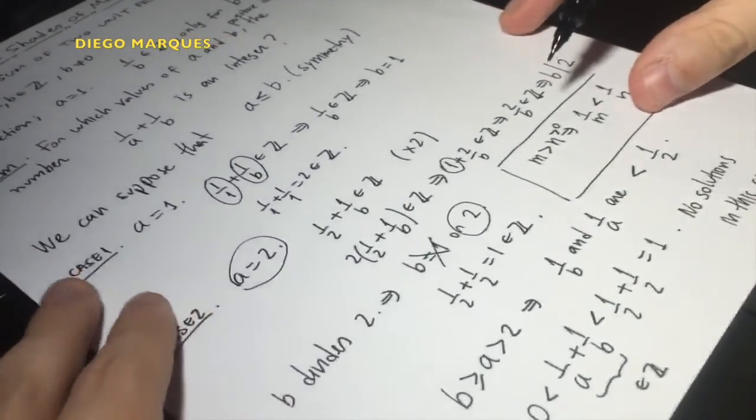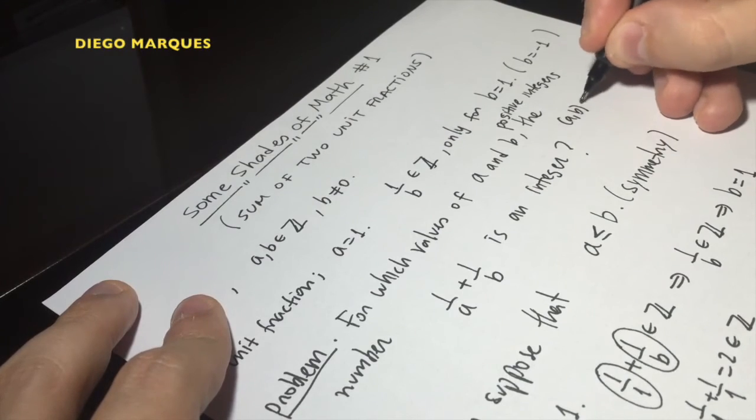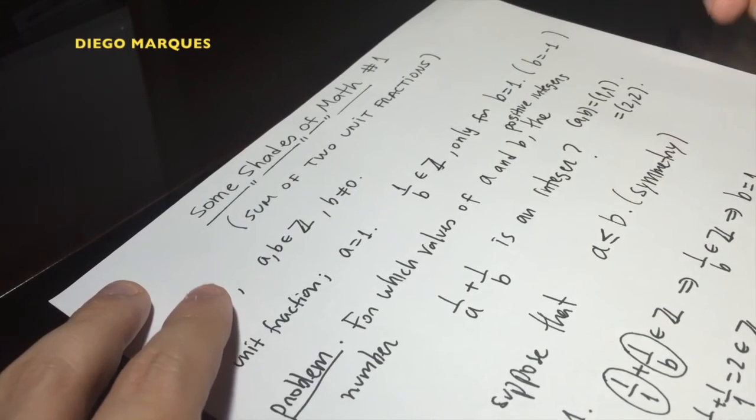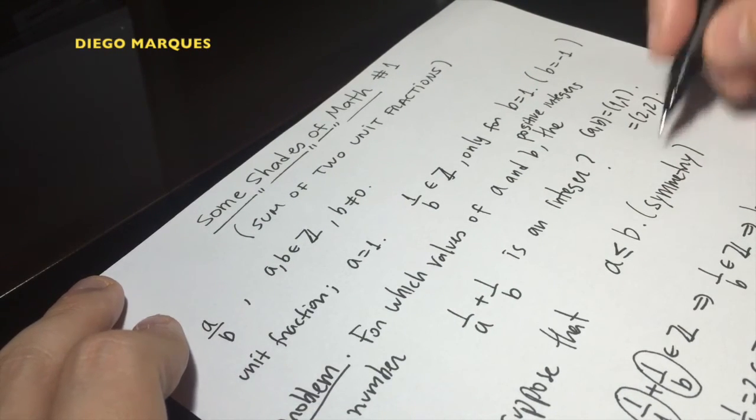Then all solutions are (a, b) equal to (1, 1), and (a, b) equal to (2, 2). These are the only solutions. And we can find all solutions of this problem.